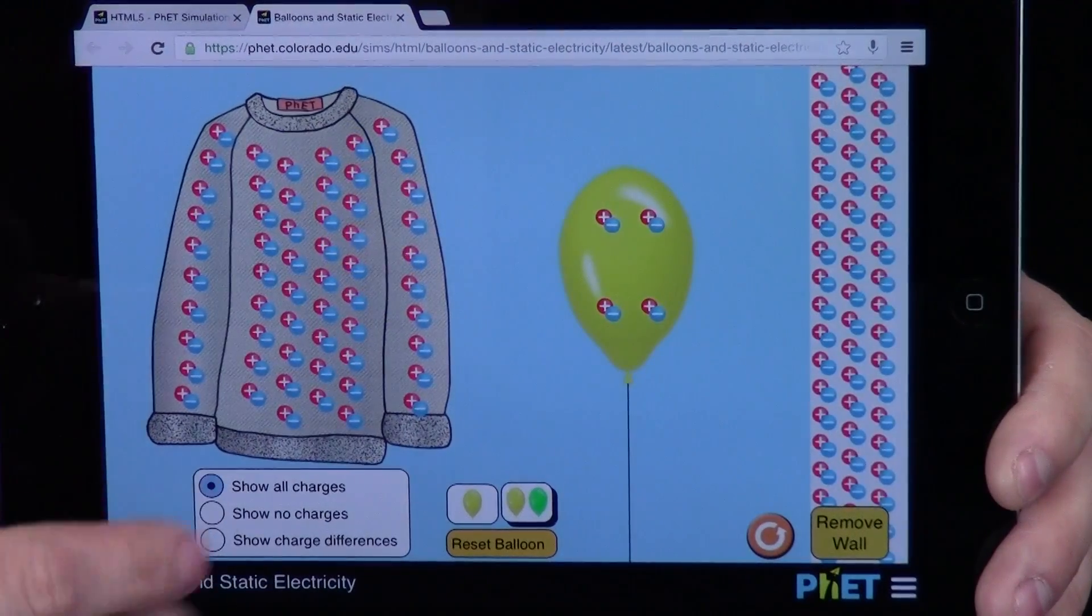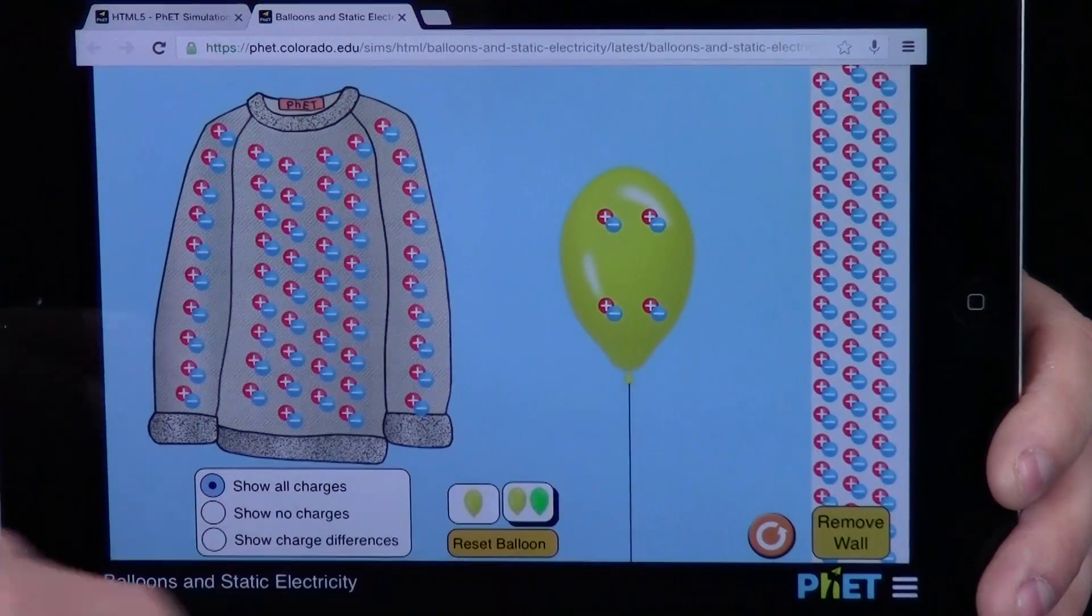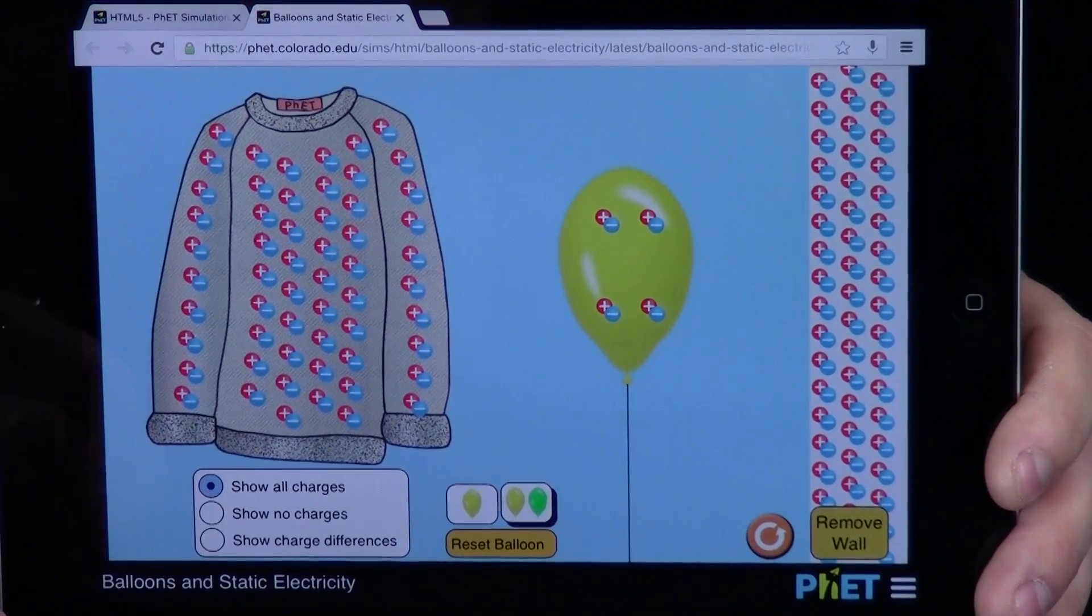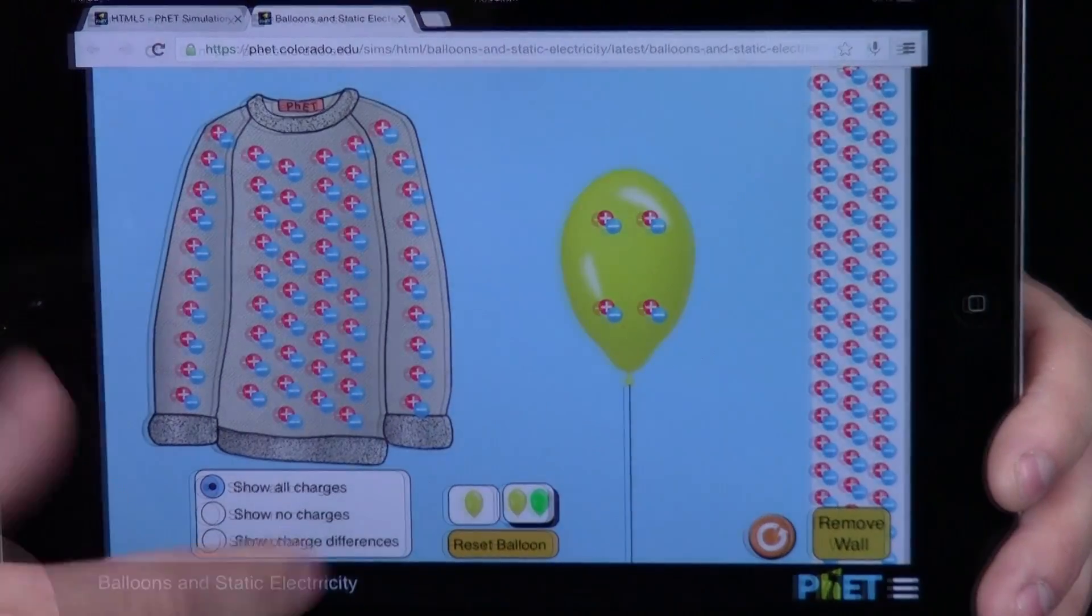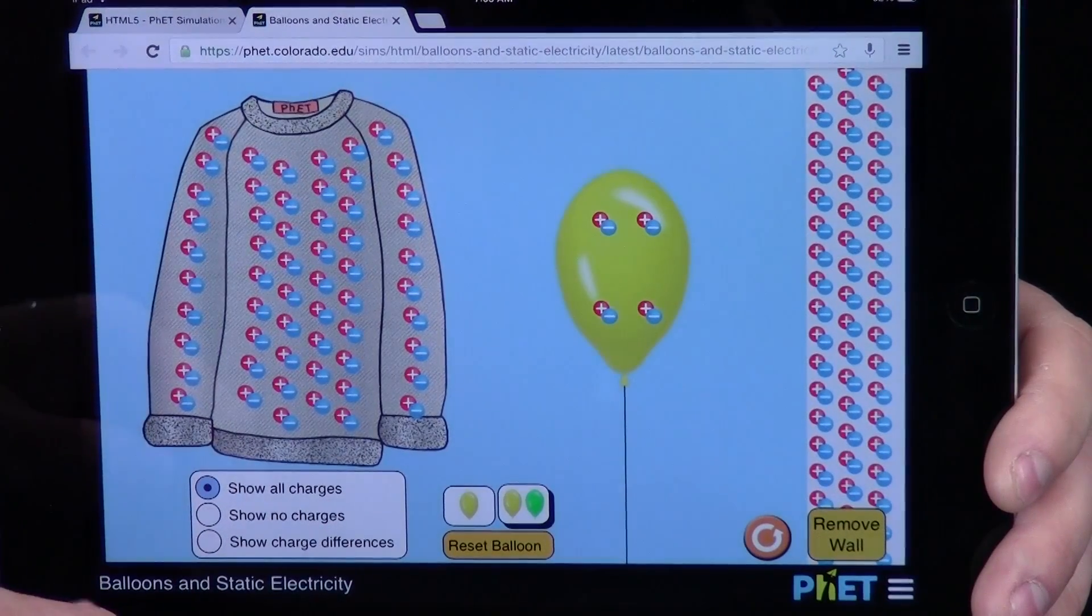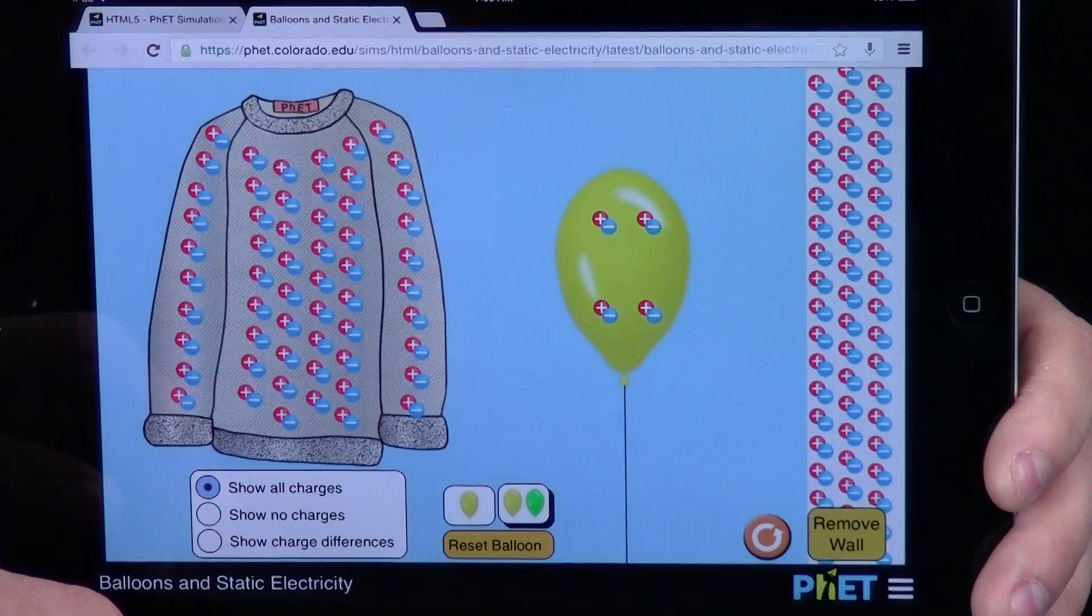I brought it back to how it looks when you first open the site. You can see we can add a wall. There are all kinds of other buttons you can press. We could add a second balloon. There's so much for you to explore. All you have to do is click on the link in our video description and check it out.